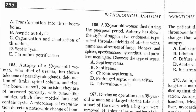Question 166: A 32-year-old woman died during the peripartum period. Autopsy showed signs of suppurative endometritis, prevalent thrombophlebitis of uterine veins, and numerous abscesses of the lungs. When you hear of multiple abscesses of the lungs, we are usually talking about septicopiemia. The answer is A.